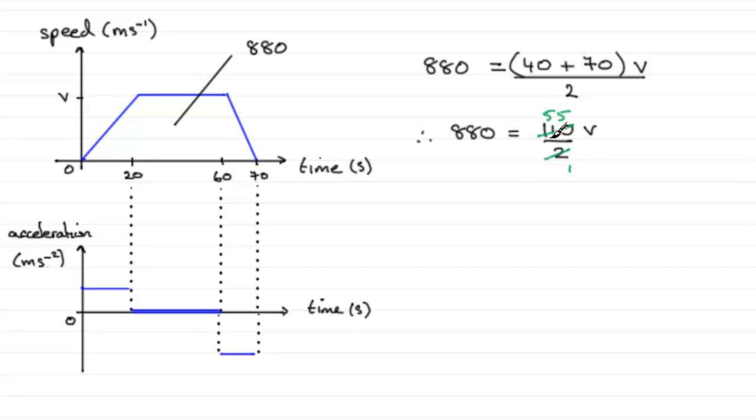So I can now divide both sides by 55, and I get V equals 880 divided by 55. And if you do that on a calculator, you end up with V being exactly 16. Alright, so that's how you get V. See you.